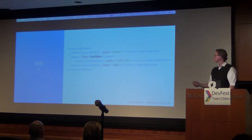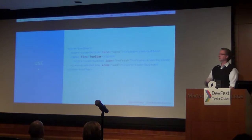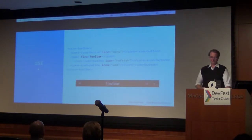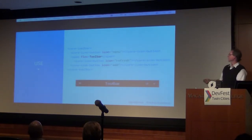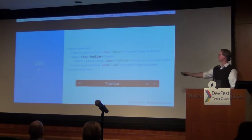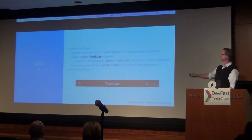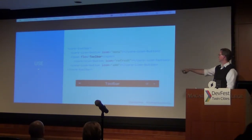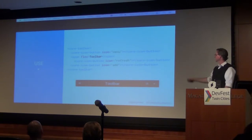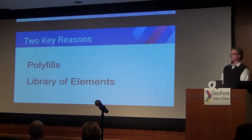You can compose elements together. Here are a couple of nested elements that will result in a toolbar with some text in the middle that's nicely centered. It's got a couple of core icons from the core icon set — your hamburger menu, some refresh, different actions that you can tie into them.